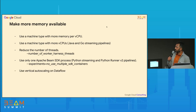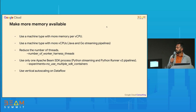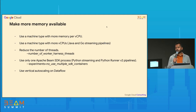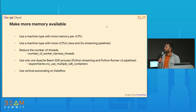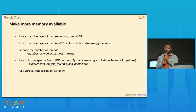The final option is vertical auto-scaling in Dataflow — a fairly new feature that no other runner currently offers. This capability automatically scales the memory capacity of your workers based on out-of-memory issues. It's a reactive approach: if Dataflow observes out-of-memory errors, it will automatically and seamlessly replace those workers with workers that have higher memory per vCPU, without any intervention from the developer or admin.